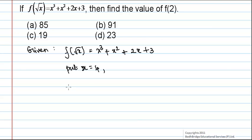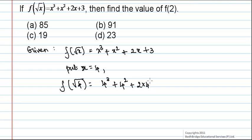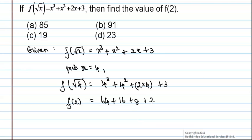Now we will get f of root 4 is equal to 4 cubed plus 4 squared plus 2 into 4 plus 3, which implies f of 2 is equal to 64 plus 16 plus 8 plus 3, which is equal to 91.